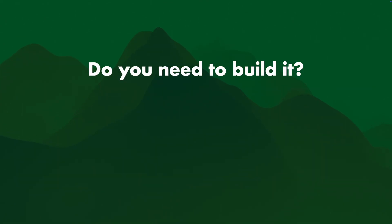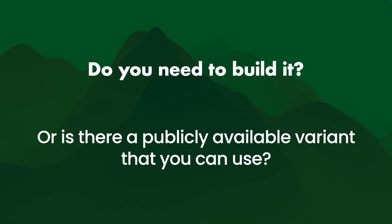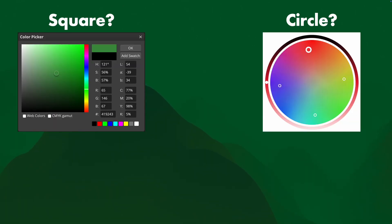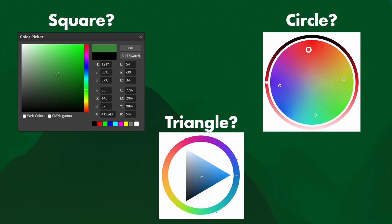So do you need to build it? Do you really, really need to build all these features? Or is there a publicly available variant that you can use — for example, one that's square, or a circle, or a triangle?